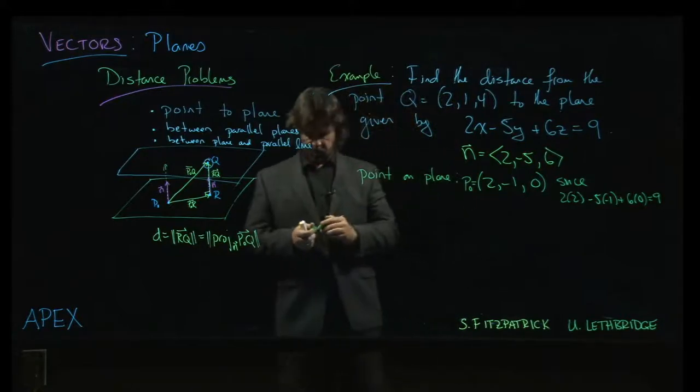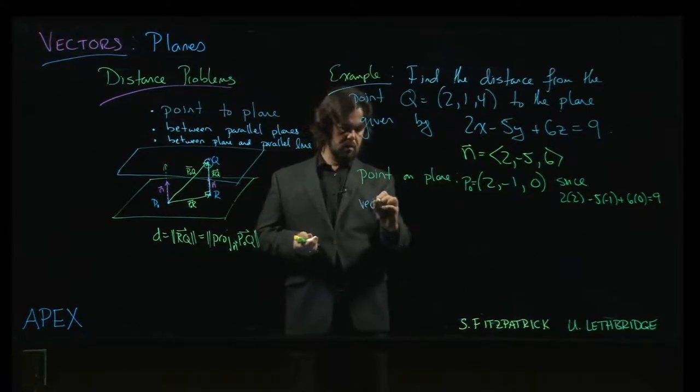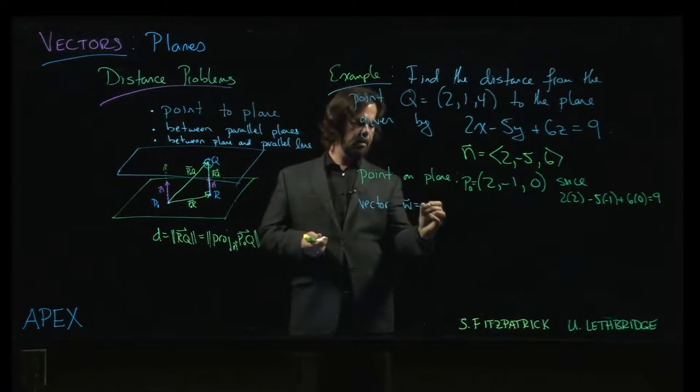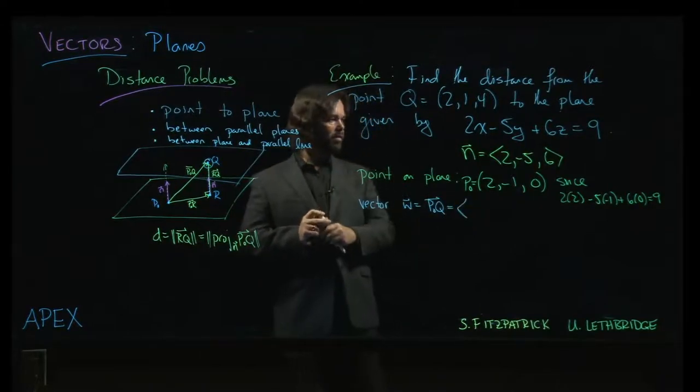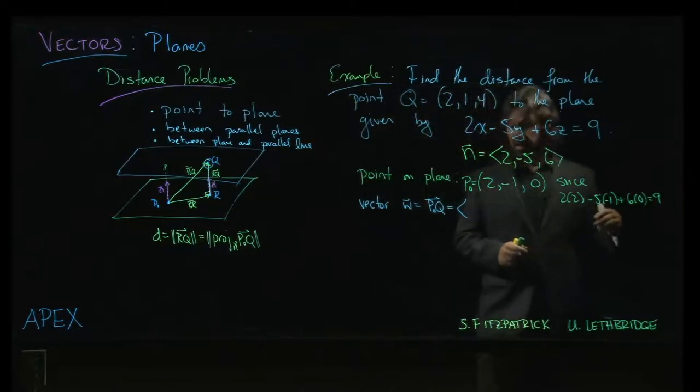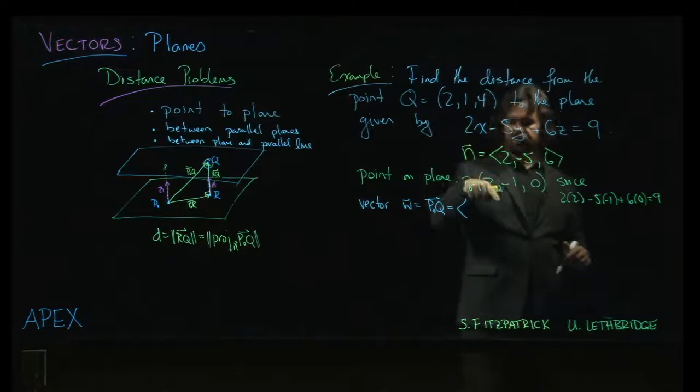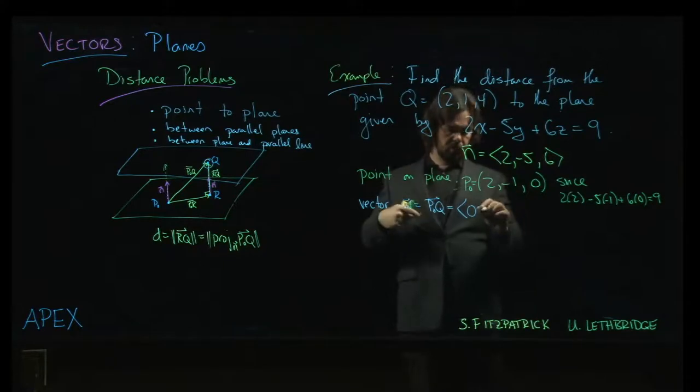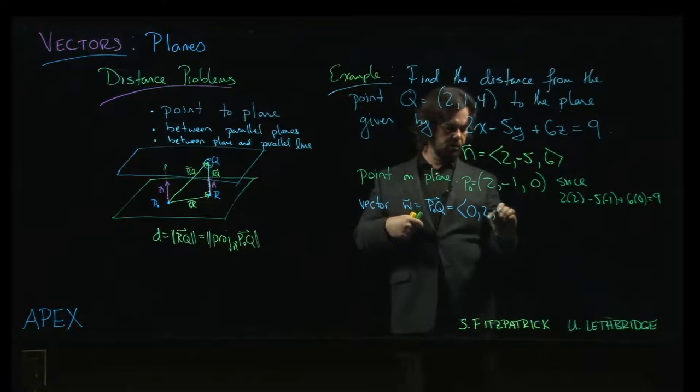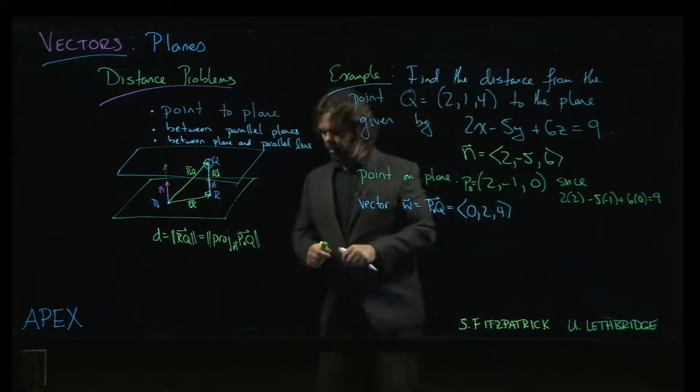The next thing we need is this vector w, which is from p0 to q. We do the usual head minus tail: here's q, here's p0, so (2-2, 1-(-1), 4-0), which gives us (0, 2, 4).